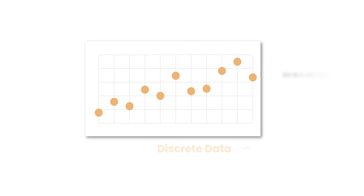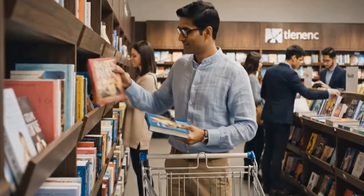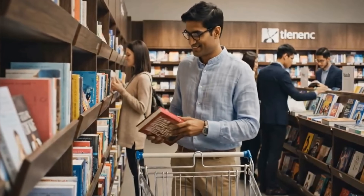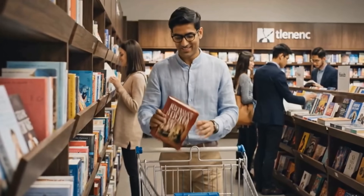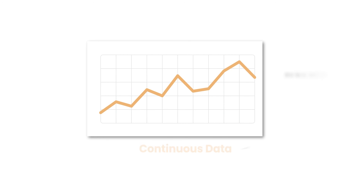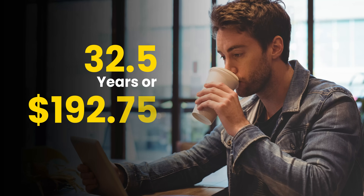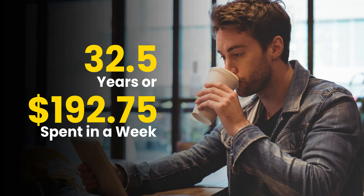Some of this data can be discrete, which means it can only take certain specific values, usually whole numbers — for example, the number of books a customer buys in a month or the number of orders placed in a day. These are countable items. On the other hand, some data is continuous, meaning it can take any value within a range and can include fractions. For instance, a customer's age, weight, or weekly spending can have decimal values, like 32.5 years or $192.75 spent in a week.